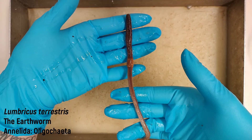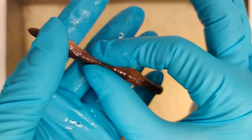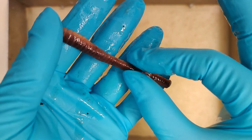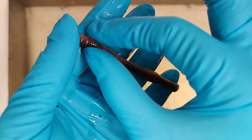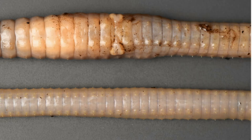The earthworm belongs to the order Oligochaeta within Clitellata, the bristle worms. Before the preparation, these bristles can be carefully felt on the ventral side, the abdominal side. In each segment there are four pairs of bristles, the setae: two on the ventral side, and one pair of bristles laterally on each side.